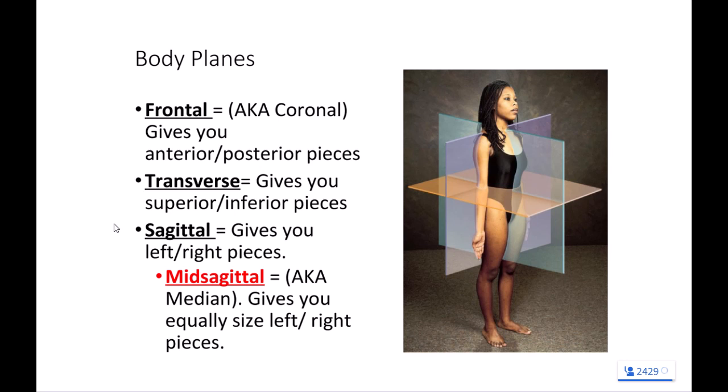With the sagittal slice, that gives you left and right. If it's an uneven slice — an uneven left-right — it's just purely sagittal, and that uneven left-right slice is almost never used. Most of us have just a little bit of OCD built into us, so if we're going to cut something in half, we like to cut it in the middle so we get even halves. If we have it right down the middle to give us even left-right pieces, it's on the mid-line, and that slice down the mid-line is called a mid-sagittal slice. That's going to be the most common slice.